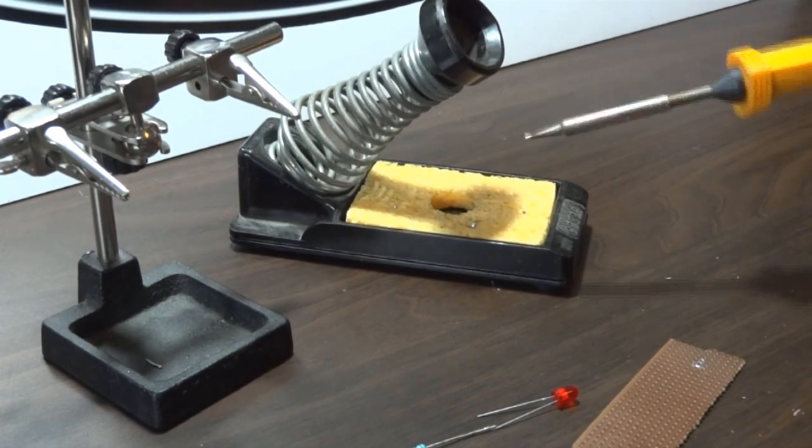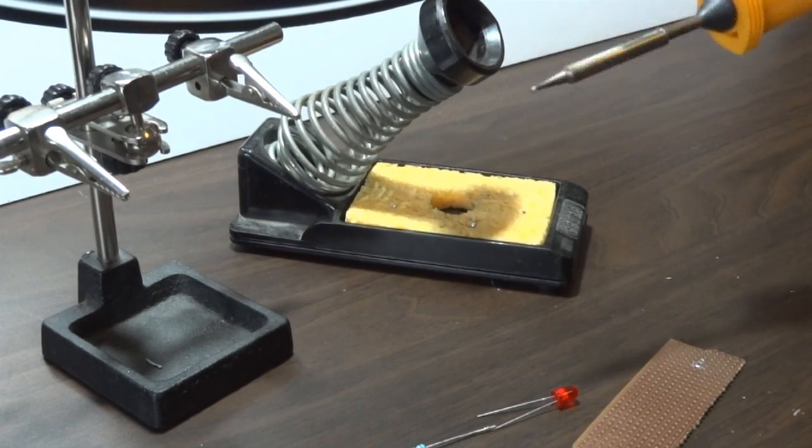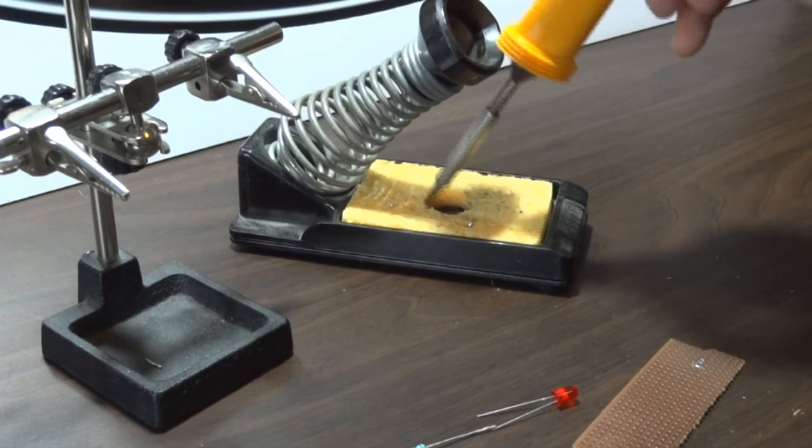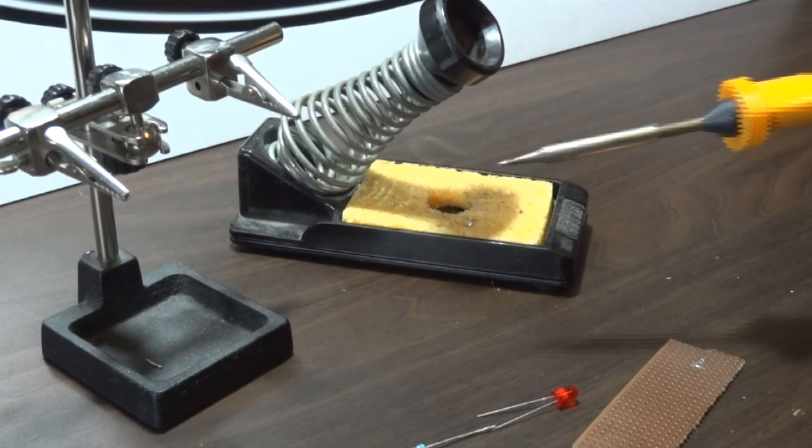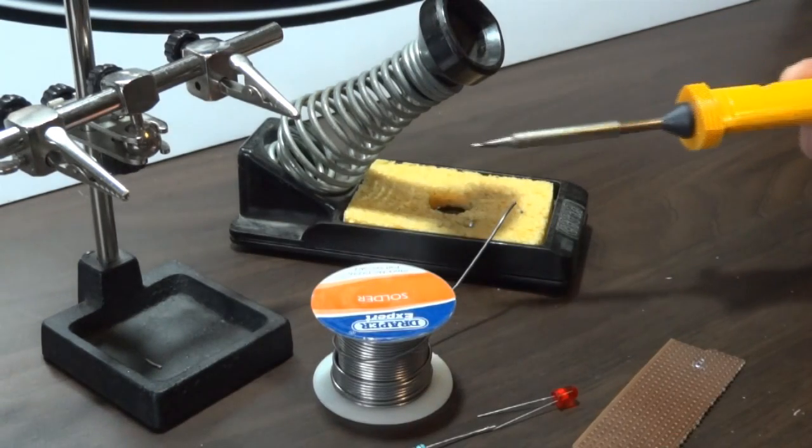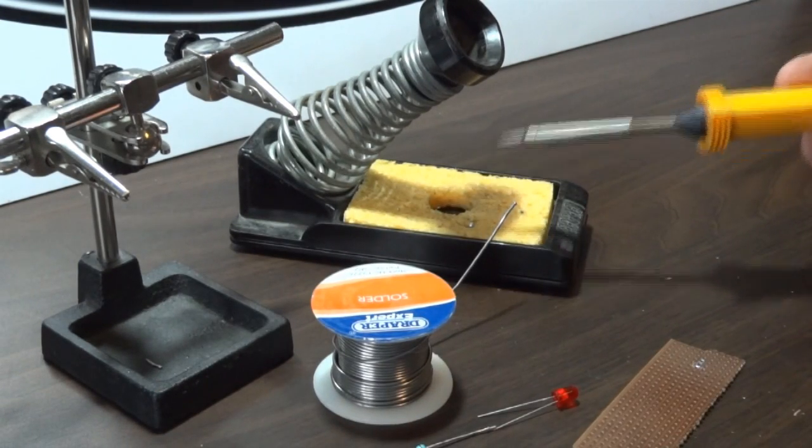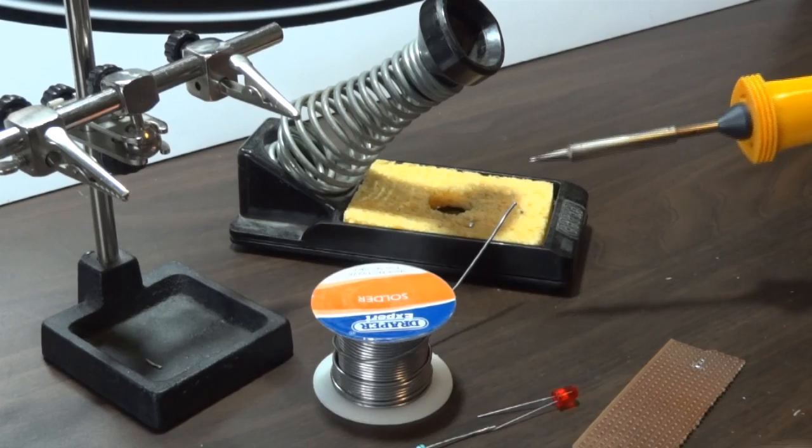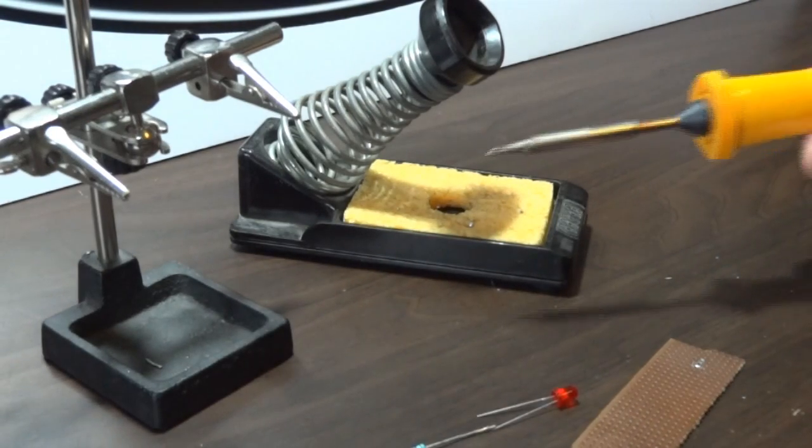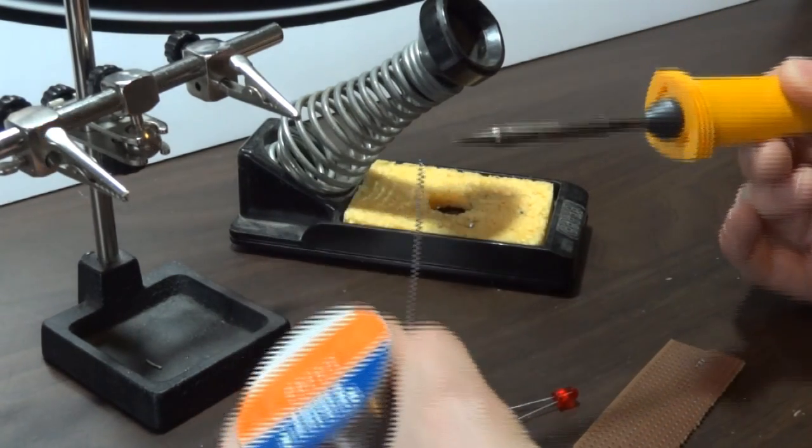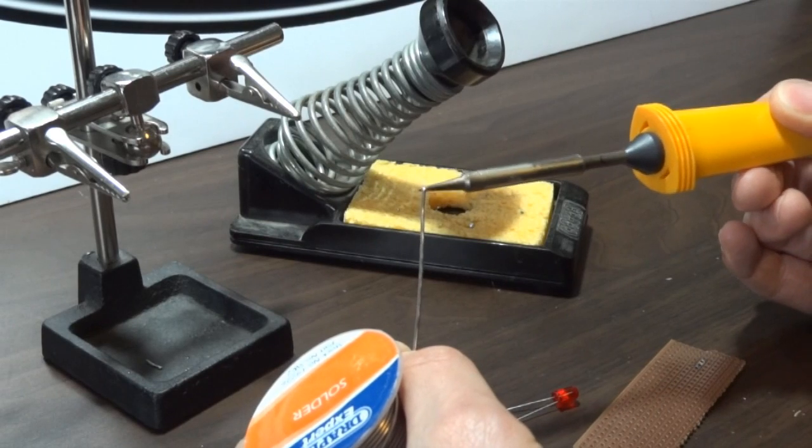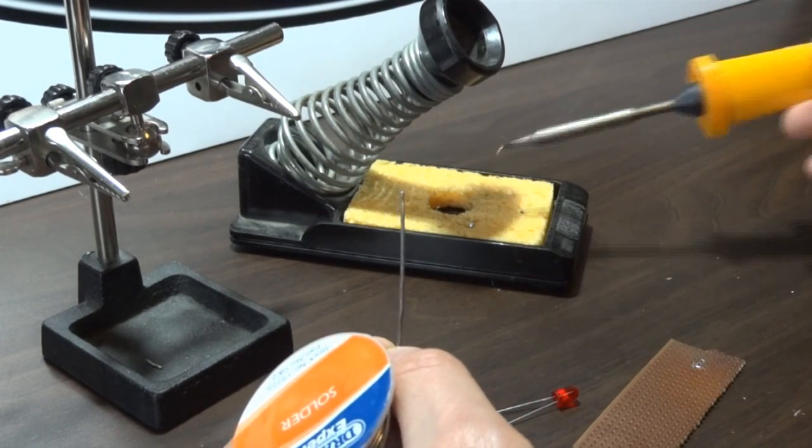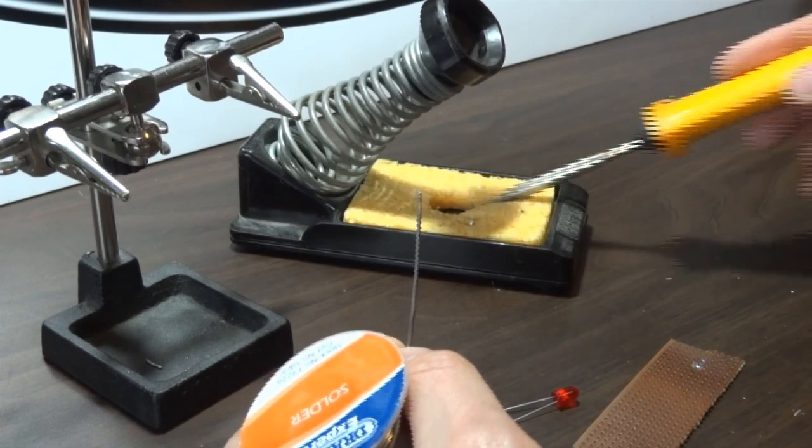So basically you should have a nice, bright, shiny tip on the soldering iron. The hole in there is for doing this. A lot of people wonder why that's there. I'm using multi-core solder, which has flux within the actual solder, and that helps keep the joint and the end clean, so you should basically tin the bit before you start, just by getting some solder on the end, giving it a good clean.